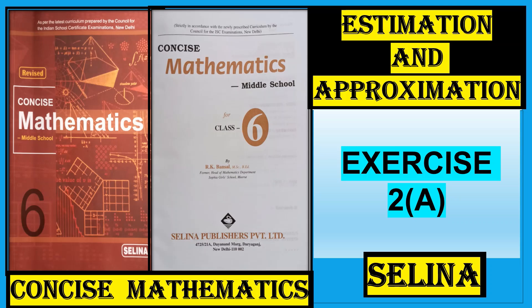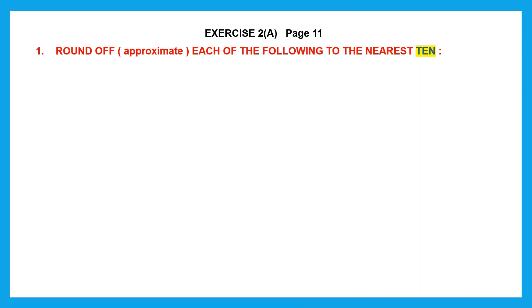Hello students, let's do estimation and approximation. Exercise 2A, page 11, Question 1: round off or approximate each of the following to the nearest 10. Get a value very close to the actual value by rounding it off to the nearest 10. That's the meaning of this question.